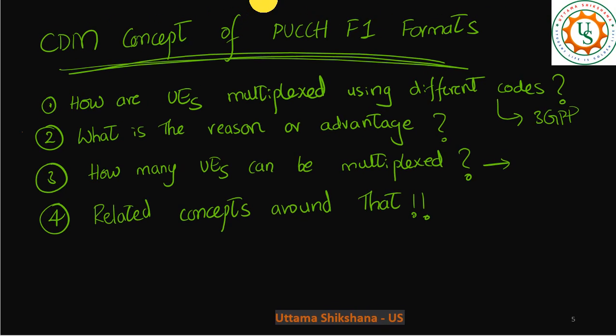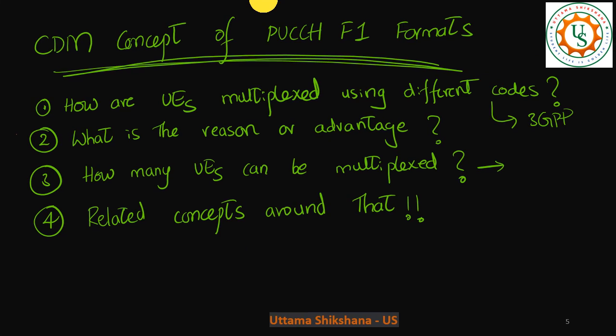So I think that's all I had today. With this, I would like to wind up the concept. I hope you got the clarity with respect to how different UEs can be multiplexed using OCC codes as well as cyclic shift, and what is the main reason, what is the main advantage. And how many UEs can be multiplexed practically, that also you got it. And I have explained all the required concepts. Thank you very much. Have a great day. Please do subscribe to the channel.